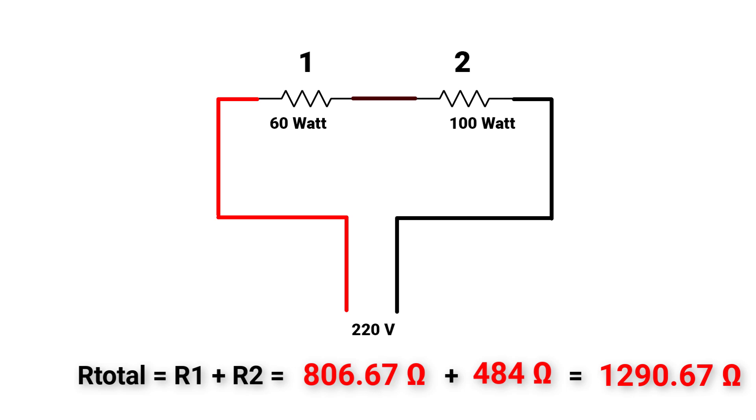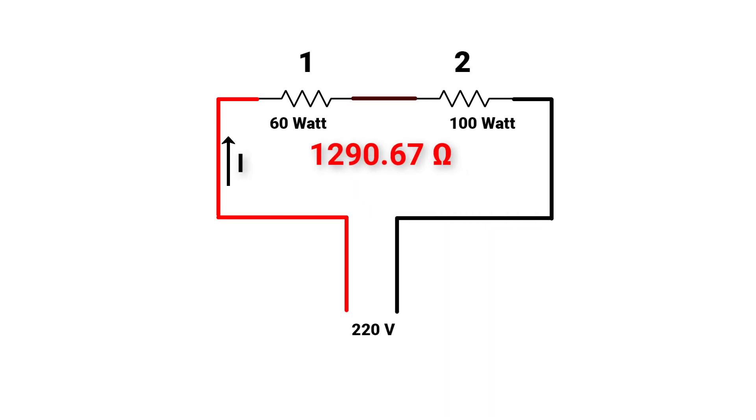Now, we can calculate the current that will go through the two lamps using Ohms law. So, as you know, V equal to I times R, or I will equal to V over R. So 220V over the total resistance will equal to 0.17A.